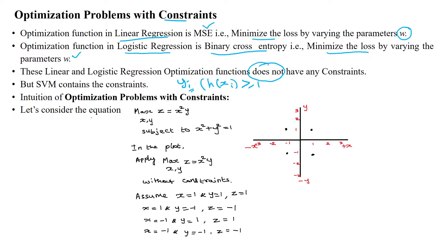We will consider the equation z equal to x squared times y. Here we are maximizing the z function using x and y parameters. This function has the constraint x squared plus y squared equal to one. So this function is to be maximized with respect to the constraint x squared plus y squared equal to one. In this plot, we apply x and y values while changing the parameters.